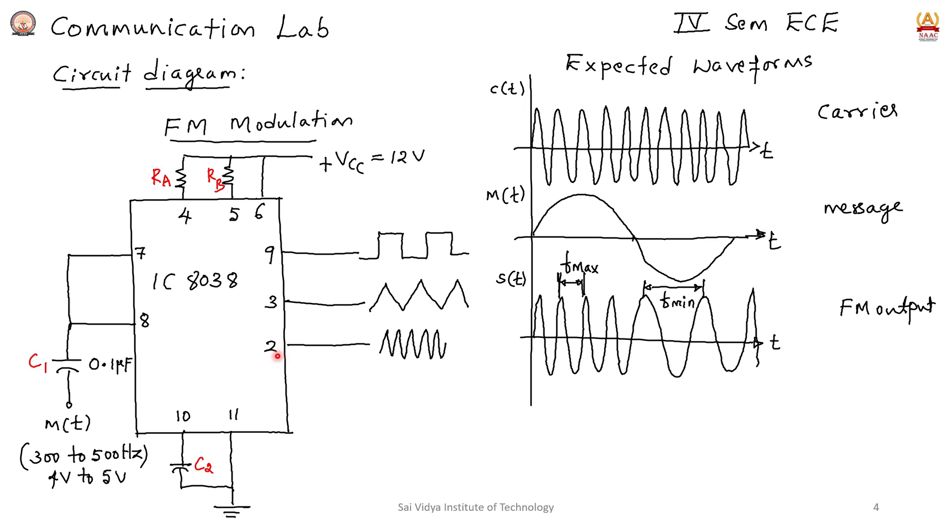We observe the FM wave at pin number 2 upon application of the message signal, which is 300 to 500 hertz with an amplitude of 4 to 5 volts.